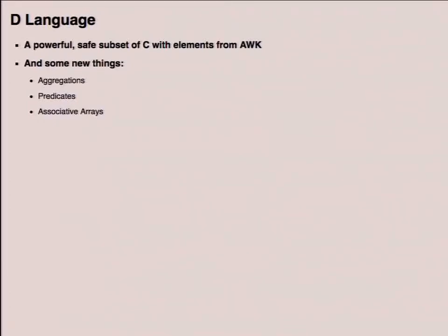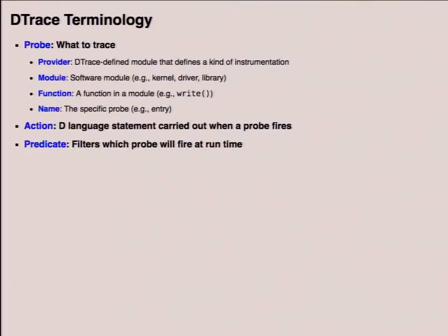The D language — not to be confused with the other D language — is a powerful safe subset of C with elements of awk. The safe subset is the important part because you want to trace production systems. A lot of the design of the language comes from that, so you can't do loops, among other restrictions. In addition to this lineage, they added new things: aggregations, predicates to filter when probes fire, and associative arrays. DTrace has probes — which define what you want to trace — and actions, which define what occurs when a probe fires: printf statements, trace statements, and so on.